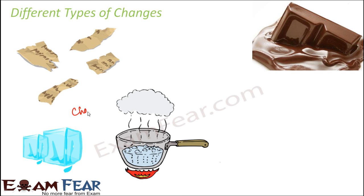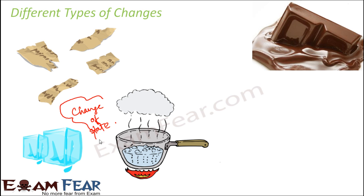This is an example of change of state — where the state is changing: solid to liquid, liquid to gas. Those kinds of changes are involved. When you talk about tearing the paper, change in shape and size are involved.